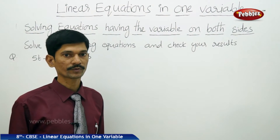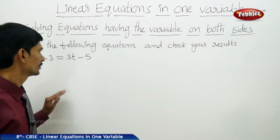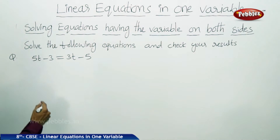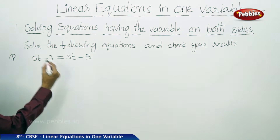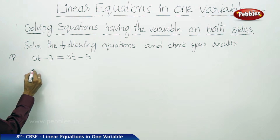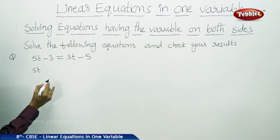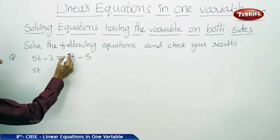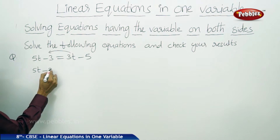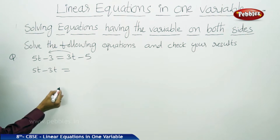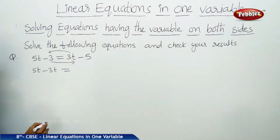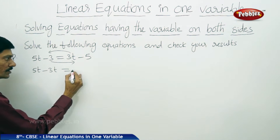Now let us solve a few problems which contain variables on either side — both LHS and RHS. The first question: 5t minus 3 equals to 3t minus 5. We write 5t as the same. Now transposing 3t from RHS to LHS, it becomes minus 3t. Now transposing minus 3 from LHS to RHS, it becomes plus 3. Minus 5 stays the same.